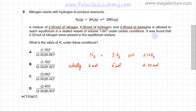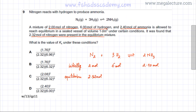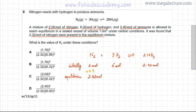At equilibrium, 2.32 moles of nitrogen are present. Initially there were 2 moles of nitrogen, so comparing these values shows that the moles of N₂ actually increased. This means the equilibrium shifted to the left — more backward reaction occurred — producing an extra 0.32 moles of N₂.